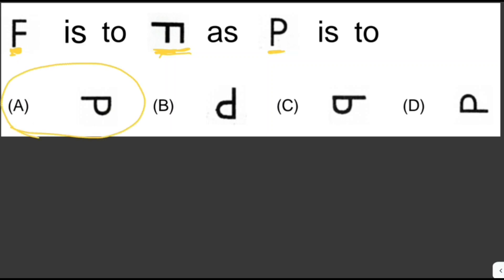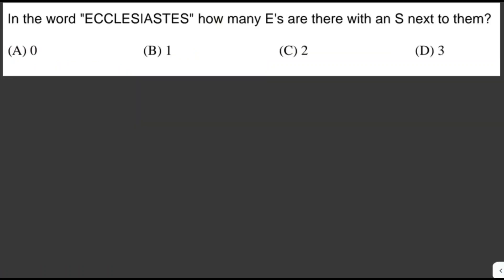In the word 'ecclesiastes,' how many E's are there with an S next to them? There are three E's total, but only two of them have an S next to them. The answer is letter C — two.